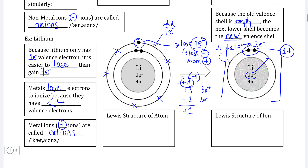Just like with non-metal ions, it is often easier to represent changes in the valence shell using Lewis structures. With metals this is even easier to do than with non-metals, because the number of valence electrons is usually quite small. Lithium only starts with one valence electron, and we know that lithium is going to lose this electron by giving it away to another element, so we represent the ion accordingly.